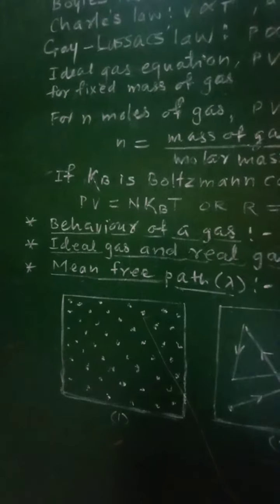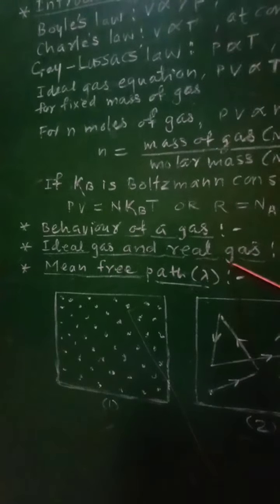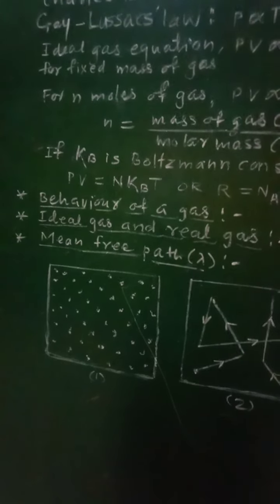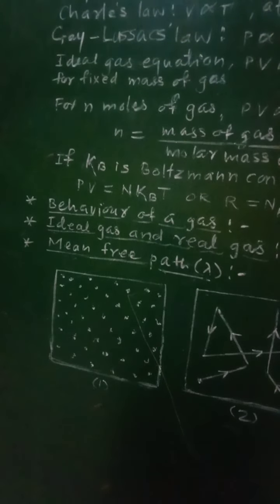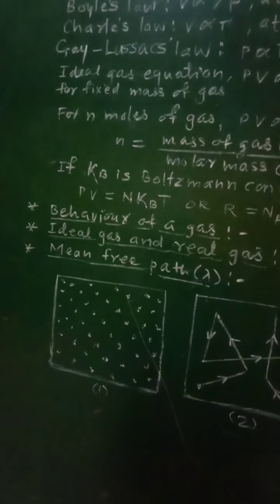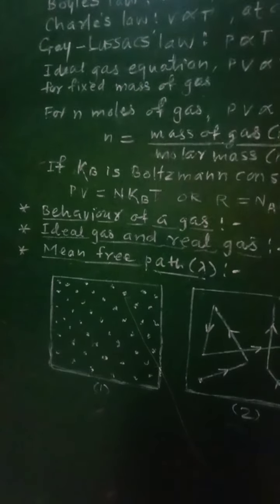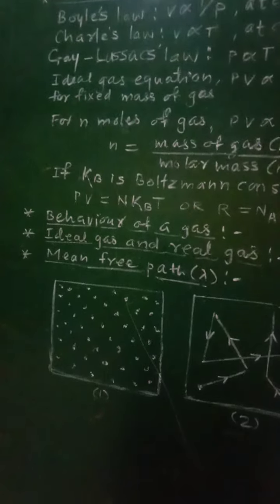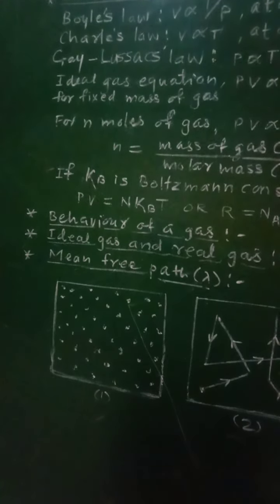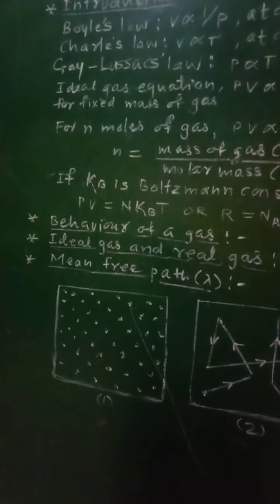Now let us see what is an ideal gas and what is a real gas. A gas which obeys the ideal gas equation at all pressures and temperatures is called an ideal gas. In an ideal gas, the intermolecular interactions between its molecules are absent.